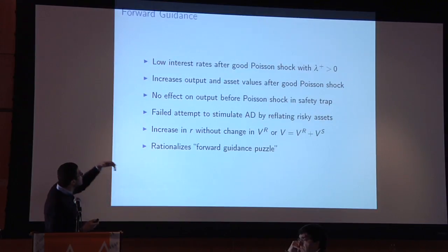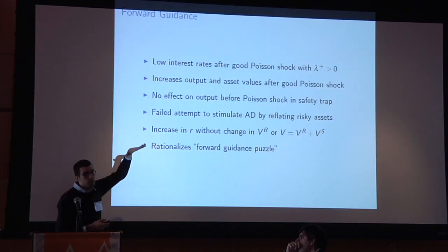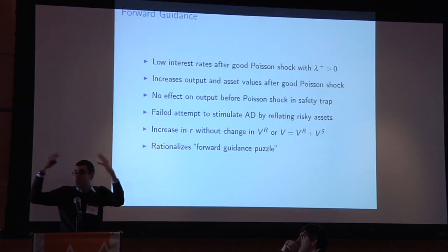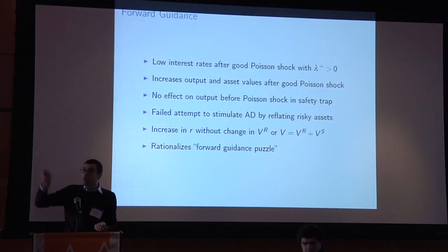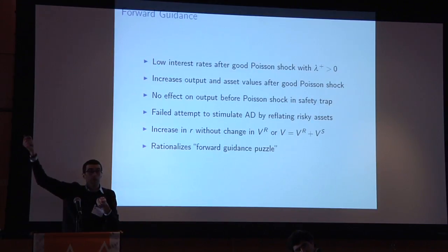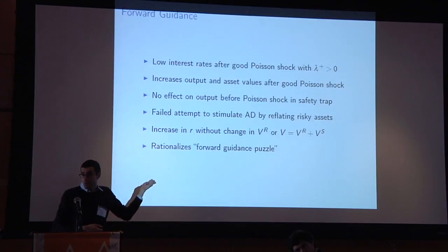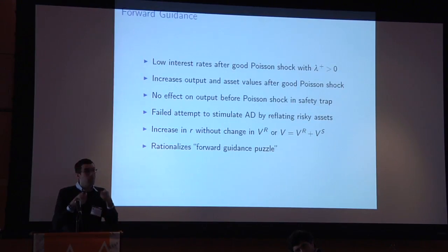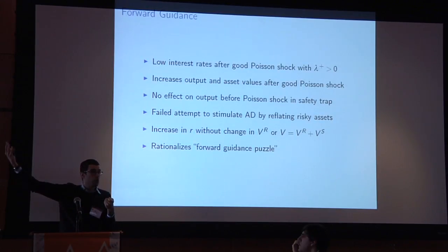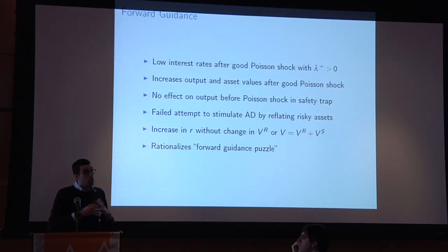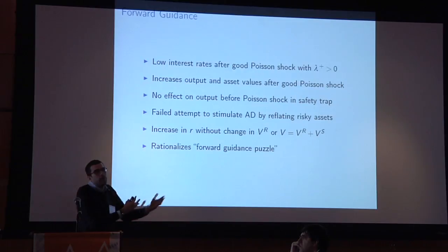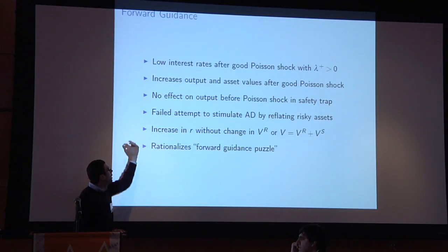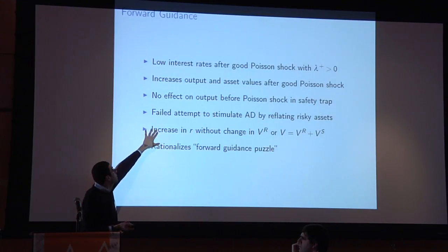In this model, keeping interest rates at zero after the good shock stimulates the economy during recovery — you have a boom and increased asset values. In the standard model, an increase in future asset values increases asset values today. But in this model, there's an increase in risk premium that completely kills the impact of higher future asset values on today's asset values — today's asset values don't change at all. So forward guidance looks like a failed attempt to stimulate aggregate demand by reflating risky assets. It's a very extreme result from extreme assumptions, but it makes the point that we may be overstating how efficacious forward guidance is.